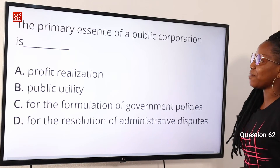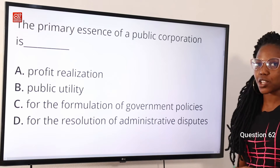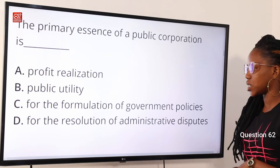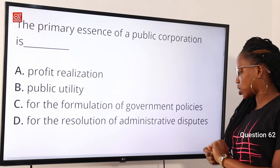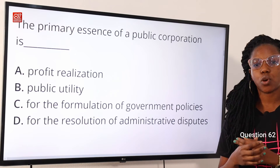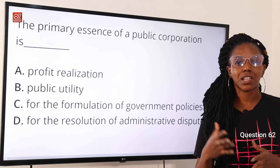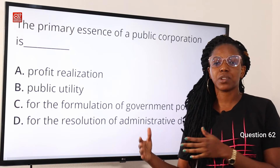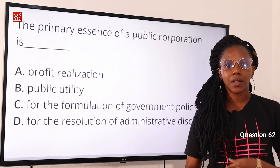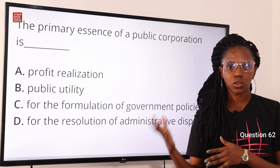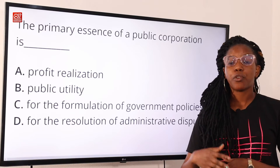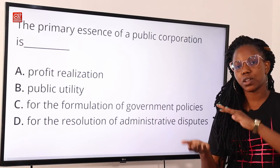Question 62: the primary essence of a public corporation is — option A, profit realization; option B, public utility; option C, for the formulation of government policies; option D, for the resolution of administrative disputes. The answer is option B, public utility. A public corporation is an entity created by the state to provide public services. Examples include PHCN, the Power Holding Company of Nigeria, and NRC, the Nigeria Railway Corporation. So option B is the correct answer.